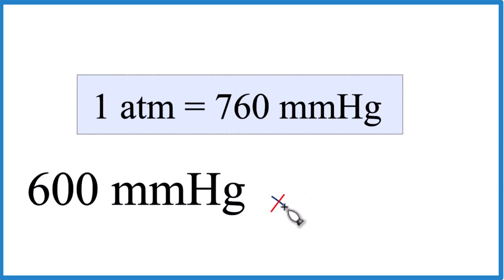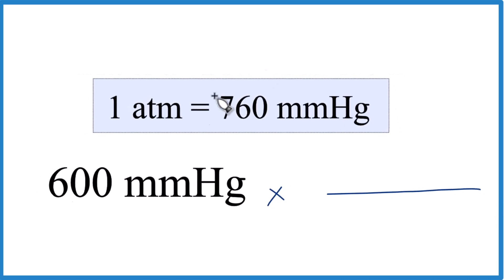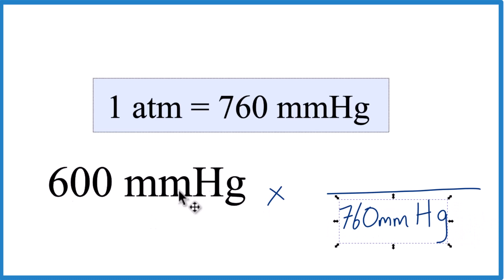When we do that, what we want here is we want millimeters of mercury to cancel out. So let's put the 760 in our denominator here so these will cancel out. And the one atmosphere, let's put that up here in the numerator.